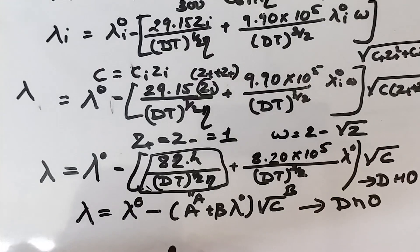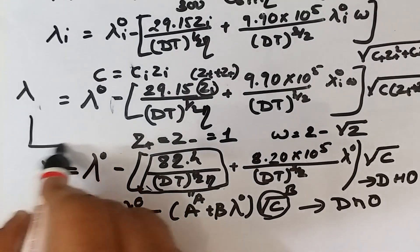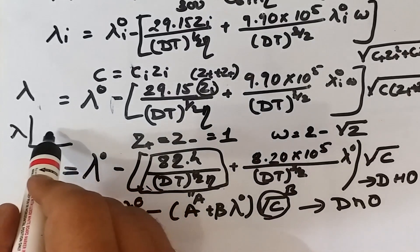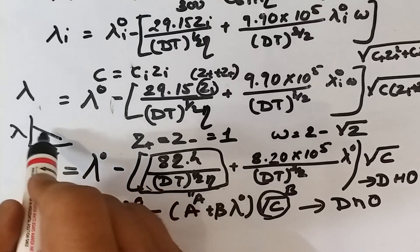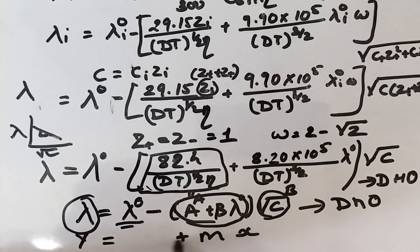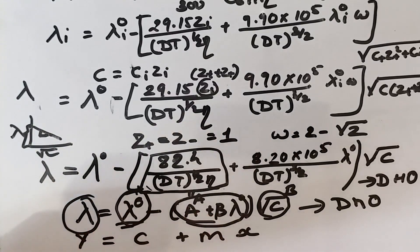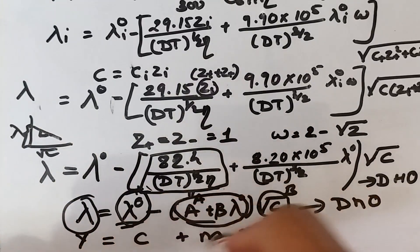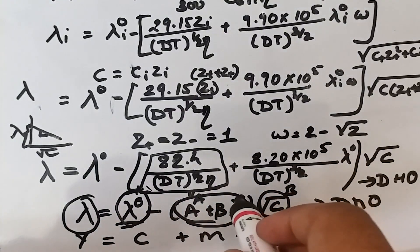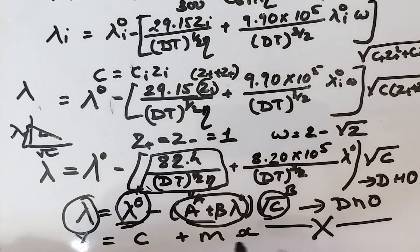The Debye-Hückel-Onsager equation simplifies to: lambda = lambda⁰ − (A + B·lambda⁰)·sqrt(c). Its validity can be checked by plotting equivalent conductance lambda versus sqrt(c), which gives a straight line. The intercept gives the value of equivalent conductance at infinite dilution lambda⁰, and the slope gives the value of (A + B·lambda⁰). This graphical verification confirms the Debye-Hückel-Onsager expression.